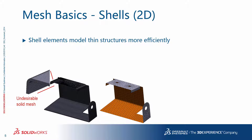Two-dimensional shell elements model thin structures more efficiently. The thickness is integrated in the element formulation, and not the meshing per se. You may ask what is thin — well, if you can model your part with a mid-surface and it looks the same as the solid, shells could be an option, although you may lose some accuracy in places like local joints and smaller fillets.